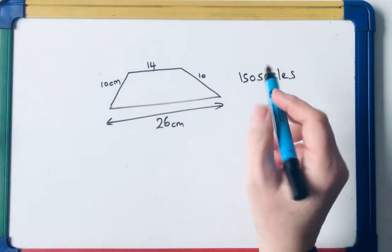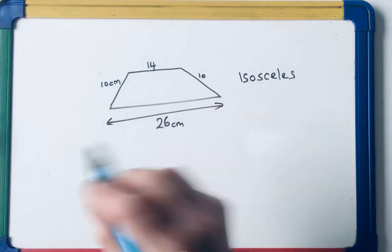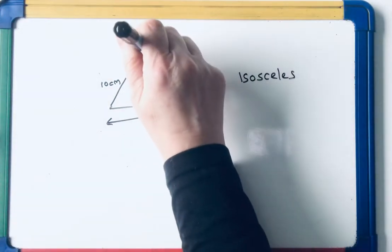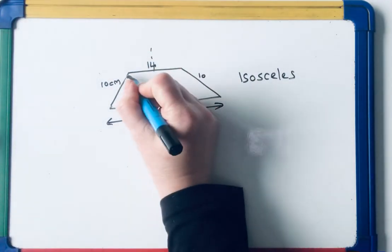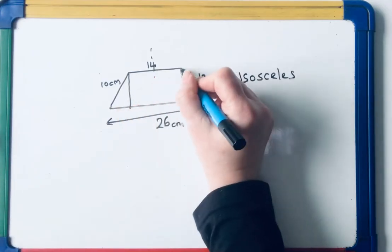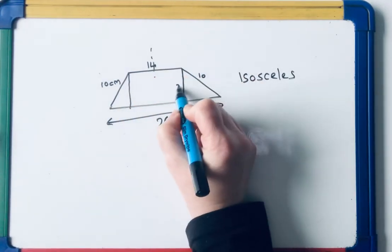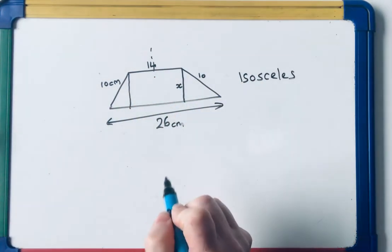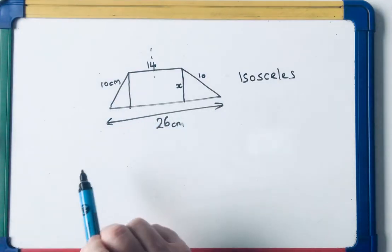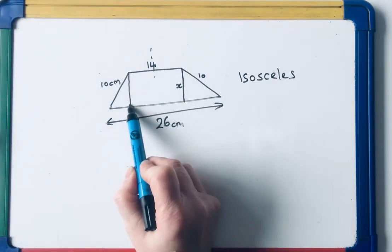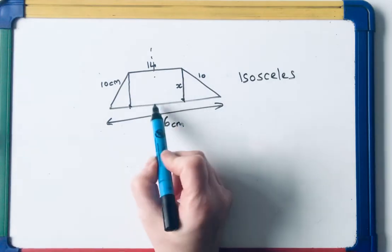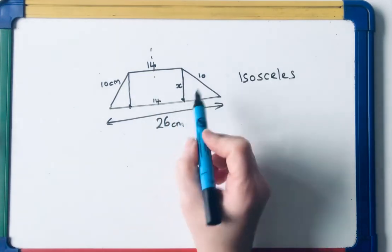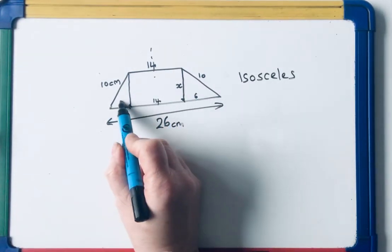So if it's an isosceles trapezium, it just means there's a line of symmetry. So these extra little bits here, that's what you want to find, that x there. Well, if all the way across there is 26, from there to there, because opposite sides of a rectangle are equal, that's 14, which makes that little bit 6, and that little bit 6.